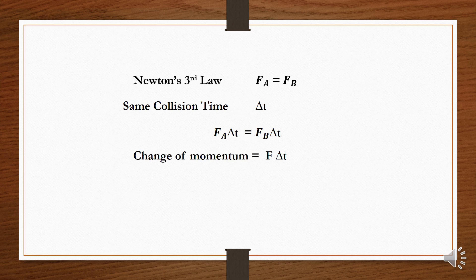So what we have here is the impulse, which is equal to force times delta t. As impulse is the change of momentum, the change in momentum is equal to force times delta t. But because they have the same size of force and the same time of contact, that means delta P A is equal to delta P B.